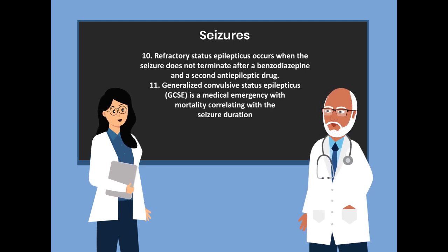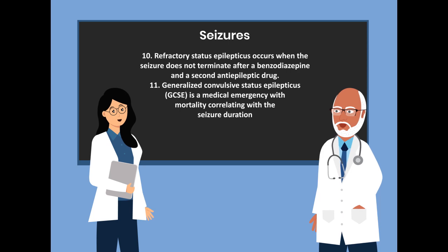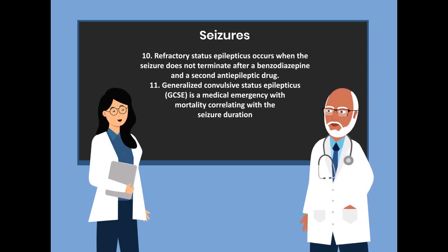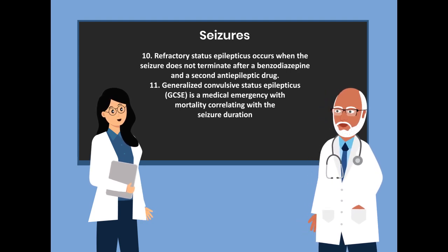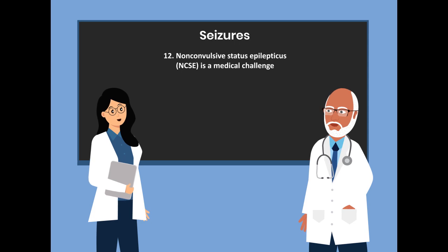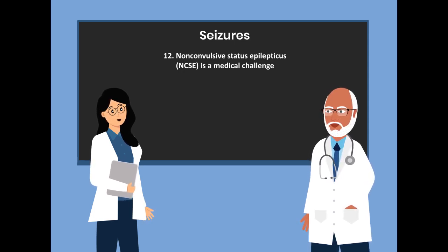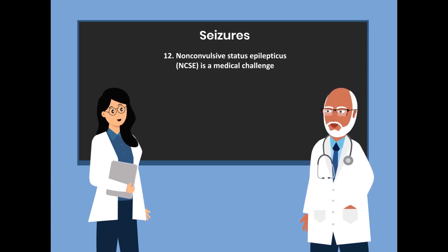Number 10: Refractory status epilepticus occurs when the seizure does not terminate after a benzodiazepine and a second anti-epileptic drug. Number 11: Generalized convulsive status epilepticus, abbreviated GCSE, is a medical emergency with mortality correlating with seizure duration. The last definition is non-convulsive status epilepticus, abbreviated NCSE — a medical challenge where patients continue to seize without any tonic-clonic action or physical manifestation indicating they are still seizing.